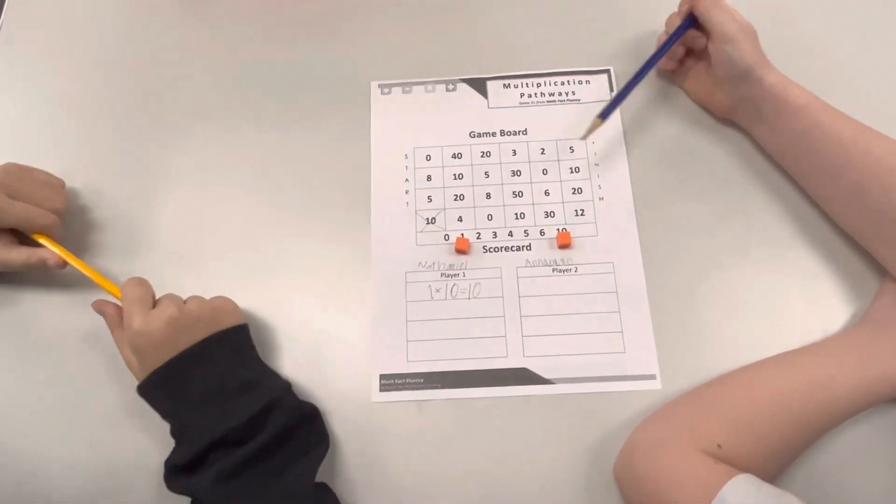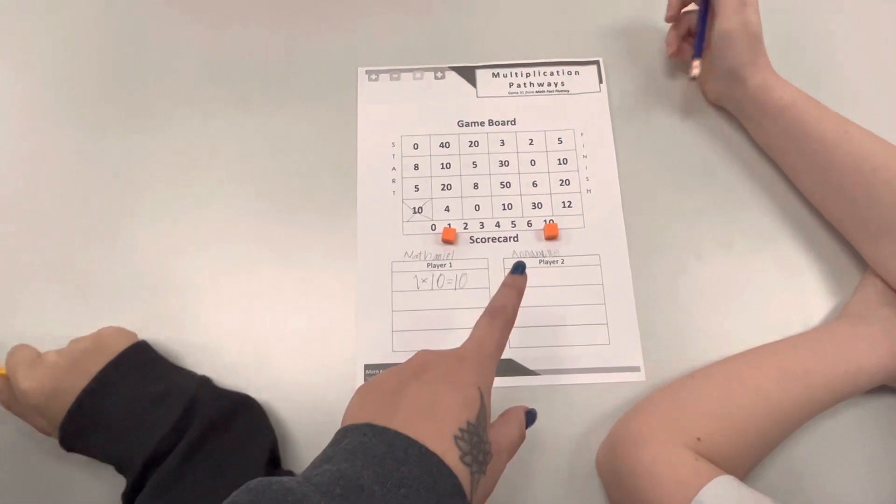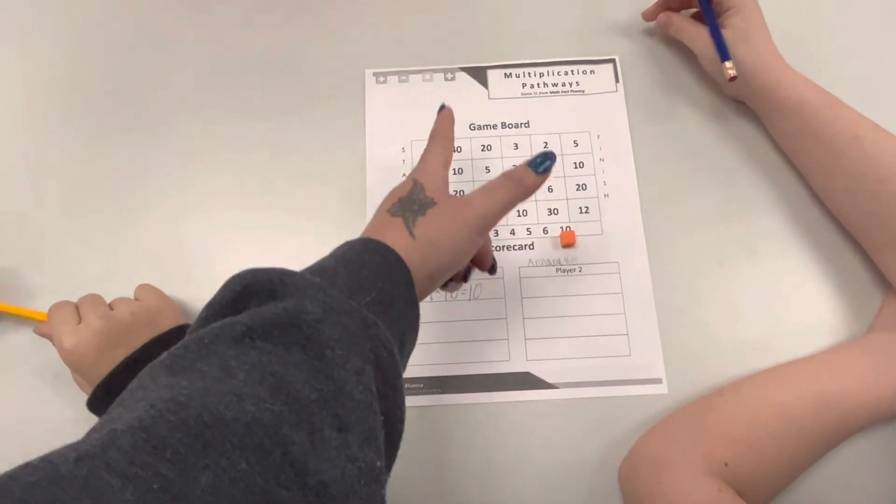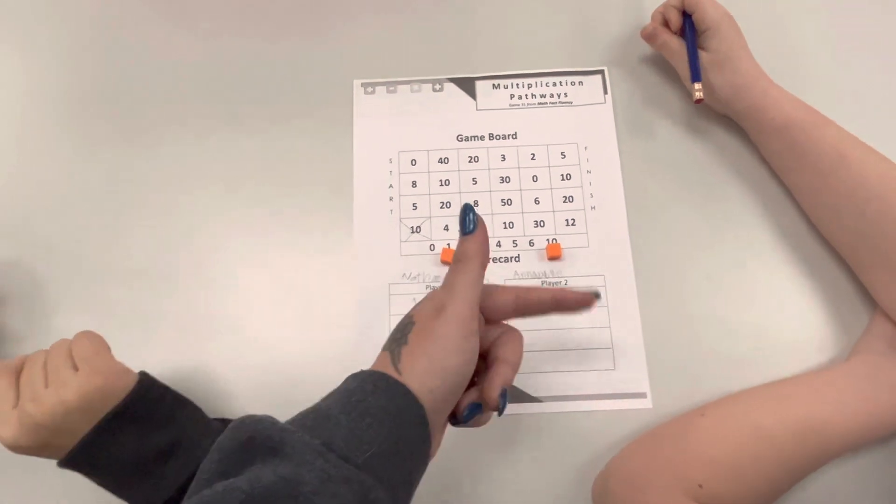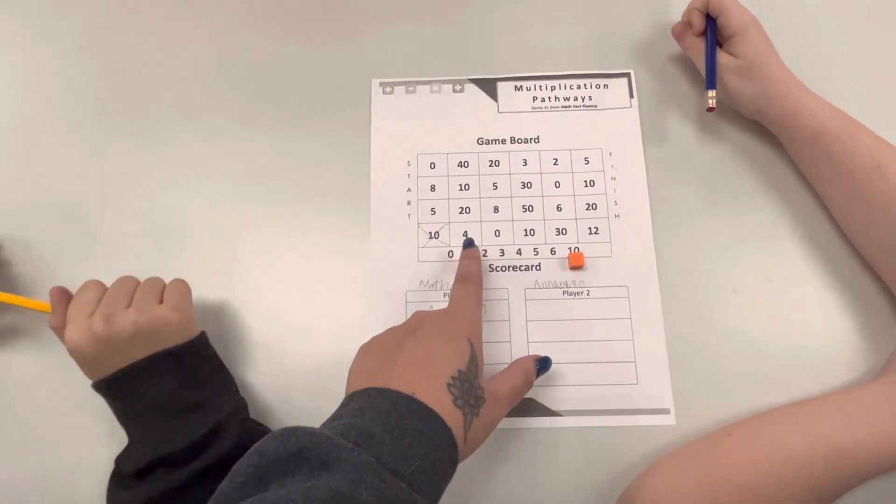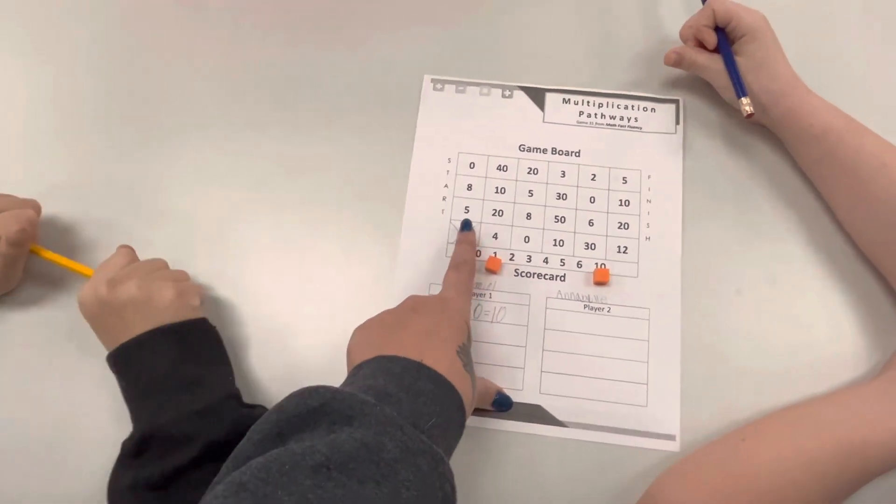Excellent. And we also need to make a pathway. Excellent. So then Annabelle's going to make a pathway. She gets to only move one cube, and she's trying to get a product that's in this column. But she wants to make a pathway, so she's going to try to do four or twenty because that would be connected on the side or corner of ten.